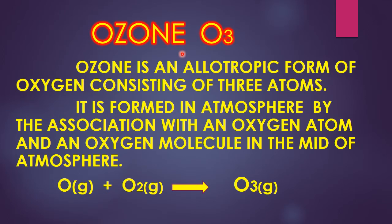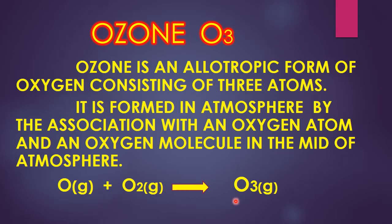First of all, we must know what is ozone. Ozone is an allotropic form of oxygen consisting of three atoms. Allotropic means an element exists in more than two forms. Ozone is formed in the atmosphere by the association of an oxygen atom and an oxygen molecule. Atomic oxygen combines with a molecule of oxygen and forms a molecule of ozone.